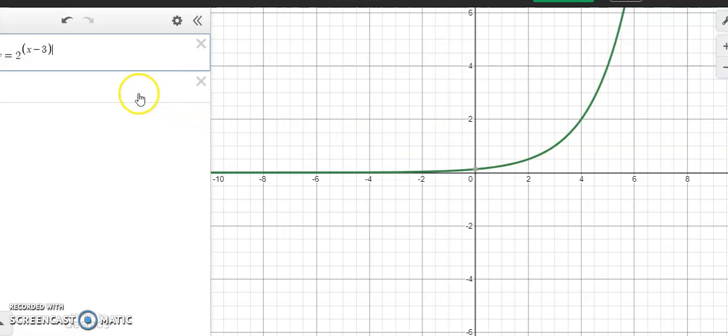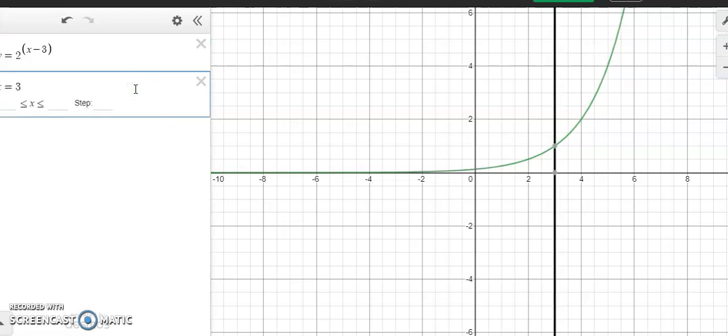But our horizontal shifts pull in the opposite direction as what they originally appear. So an x minus 3 pulls in the positive direction.